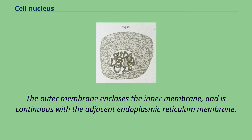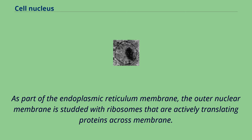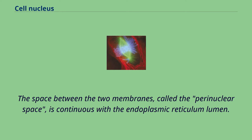The outer membrane encloses the inner membrane and is continuous with the adjacent endoplasmic reticulum membrane. As part of the endoplasmic reticulum membrane, the outer nuclear membrane is studded with ribosomes that are actively translating proteins across the membrane. The space between the two membranes, called the perinuclear space, is continuous with the endoplasmic reticulum lumen.